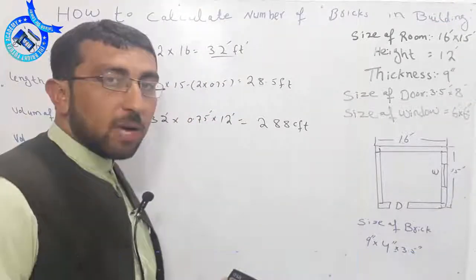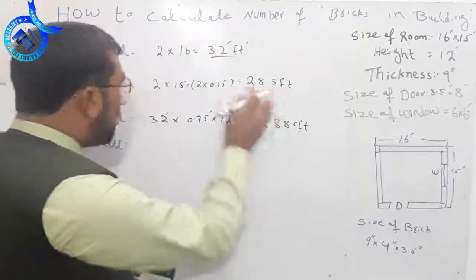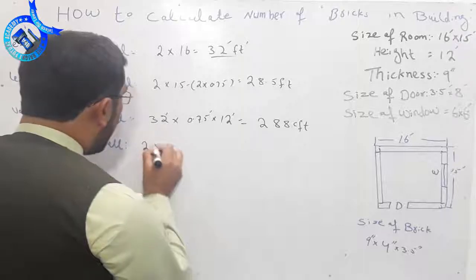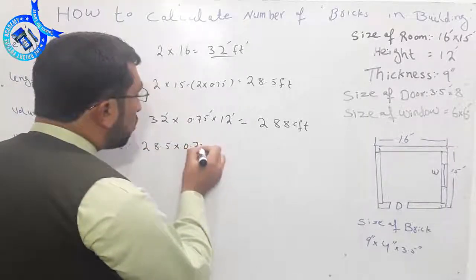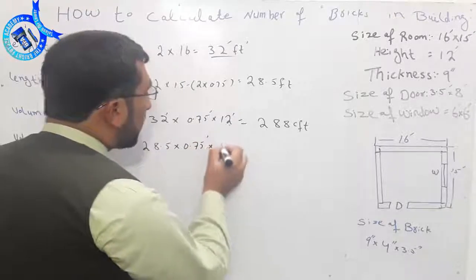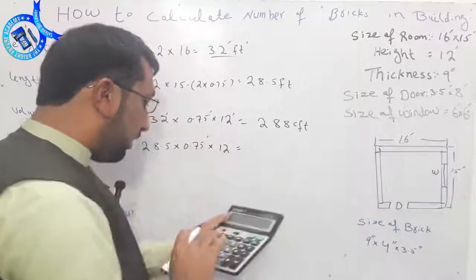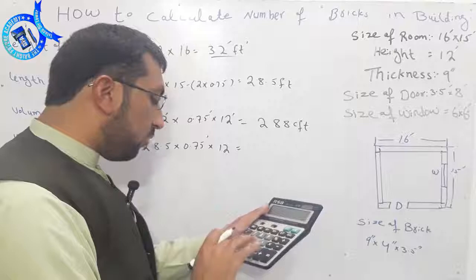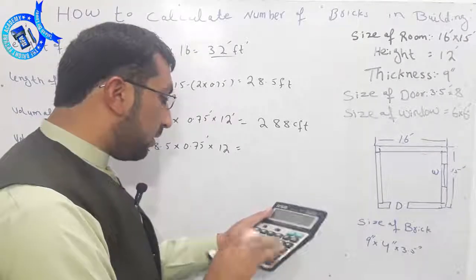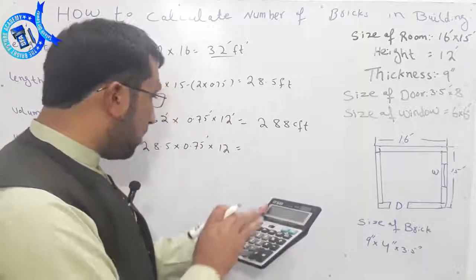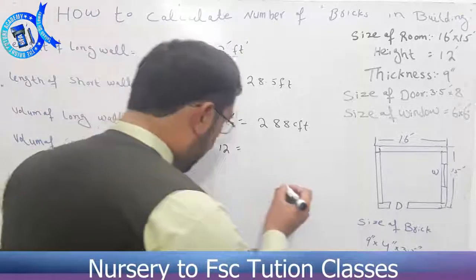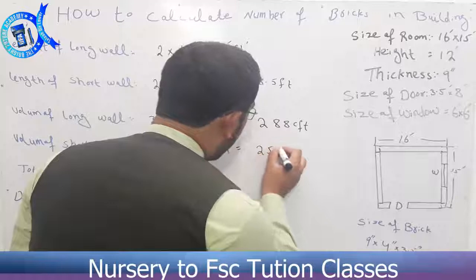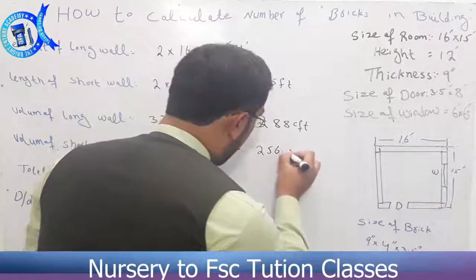What is the volume of short wall? Short wall length is 28.5 feet, breadth is 0.75 feet, and height is 12 feet. Then the calculation is 28.5 multiplied by 12. The calculation is 256.5.